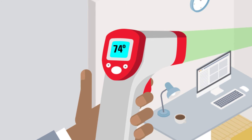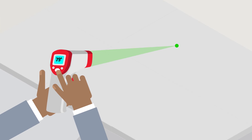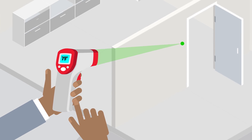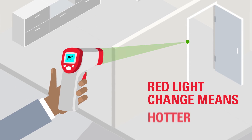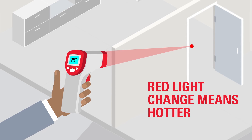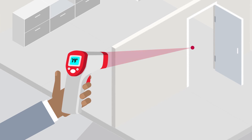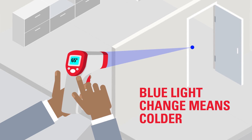This establishes a baseline temperature to measure against. Next, slowly scan the unit across the areas of interest. If the device goes from green to red, the temperature is hotter. From green to blue, the temperature is colder.